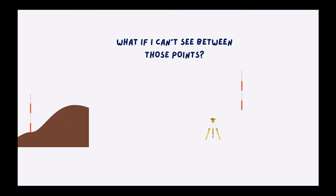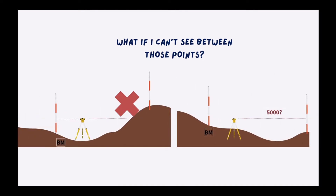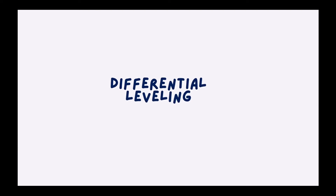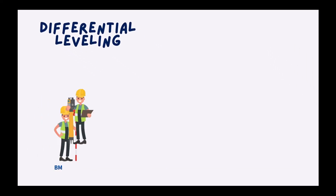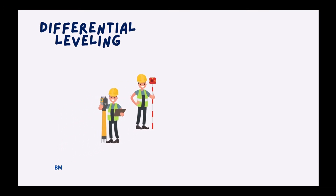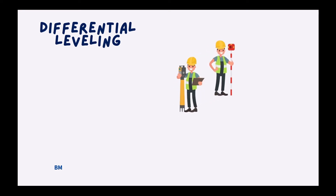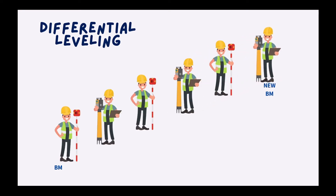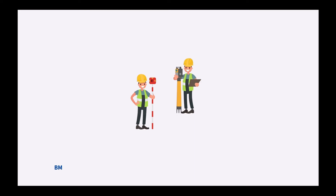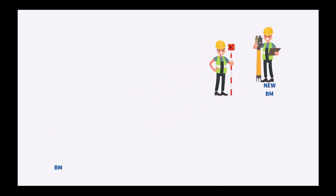But what if you can't see between those points? For instance, if the elevation distance is greater than the height of the tripod, or if the location is 5,000 feet apart. To overcome these obstacles, we perform differential leveling or a level circuit by measuring a series of elevation differences end-to-end. The rod person and instrument operator move simultaneously taking turns in a leapfrog pattern. With the final foresight, there are finally enough measurements to compute the elevation of the new benchmark. In differential leveling, surveyors need to measure twice and count once to avoid blunders.